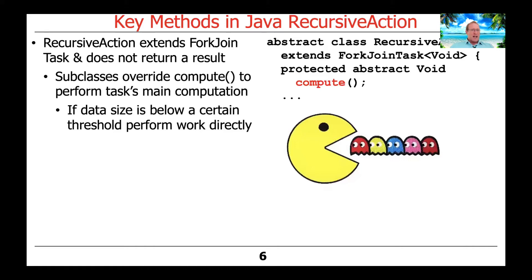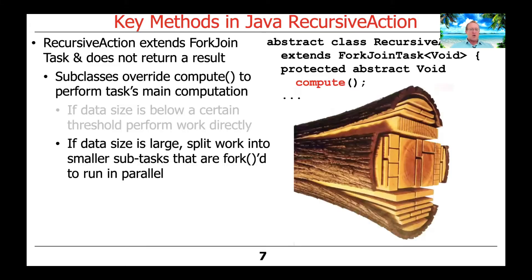Here's the typical algorithm used for compute. If the size of the data at that point is below a certain threshold, just go ahead and do the work directly — do the computation in a sequential way. However, if the data size is above that threshold, you're going to split the work up into smaller subtasks — could be two, could be n.